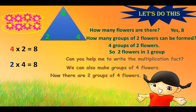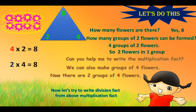Now there are two groups of four flowers. Let's try to write the division facts from the above multiplication fact: eight divided by two is four, and eight divided by four is equal to two.